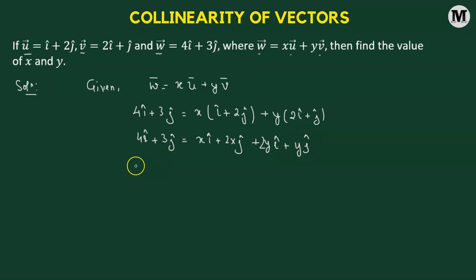Let's combine all the like terms. So we have 4 minus x minus 2y i cap added to 3 minus 2x minus y times j cap equals to the null vector 0.